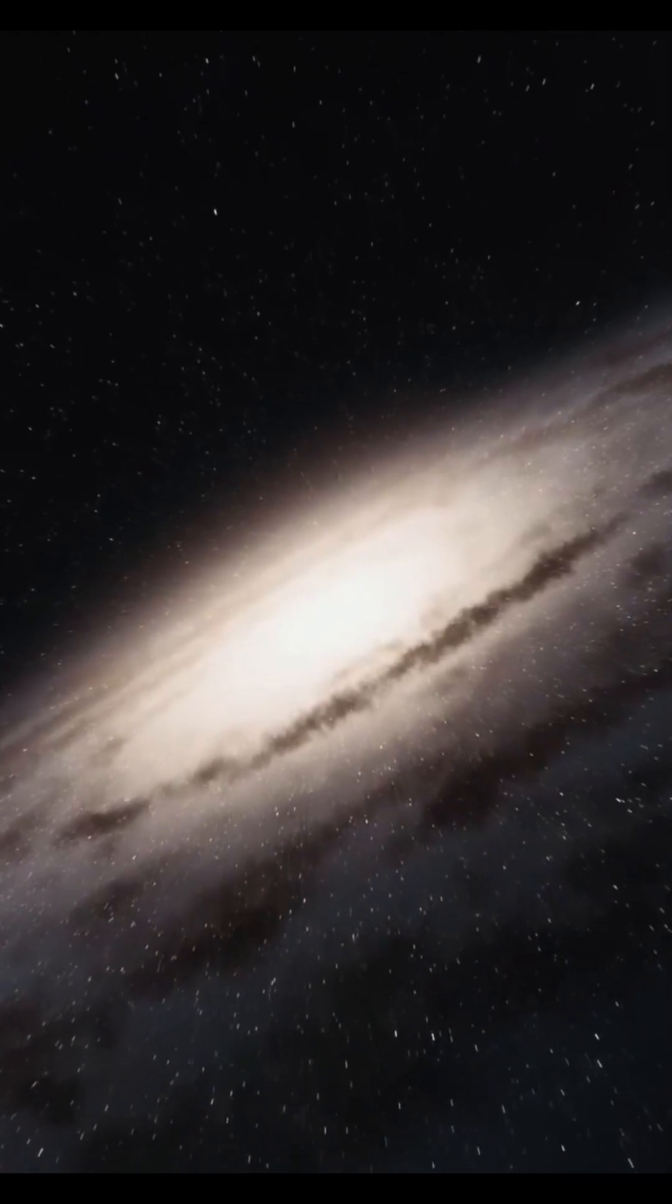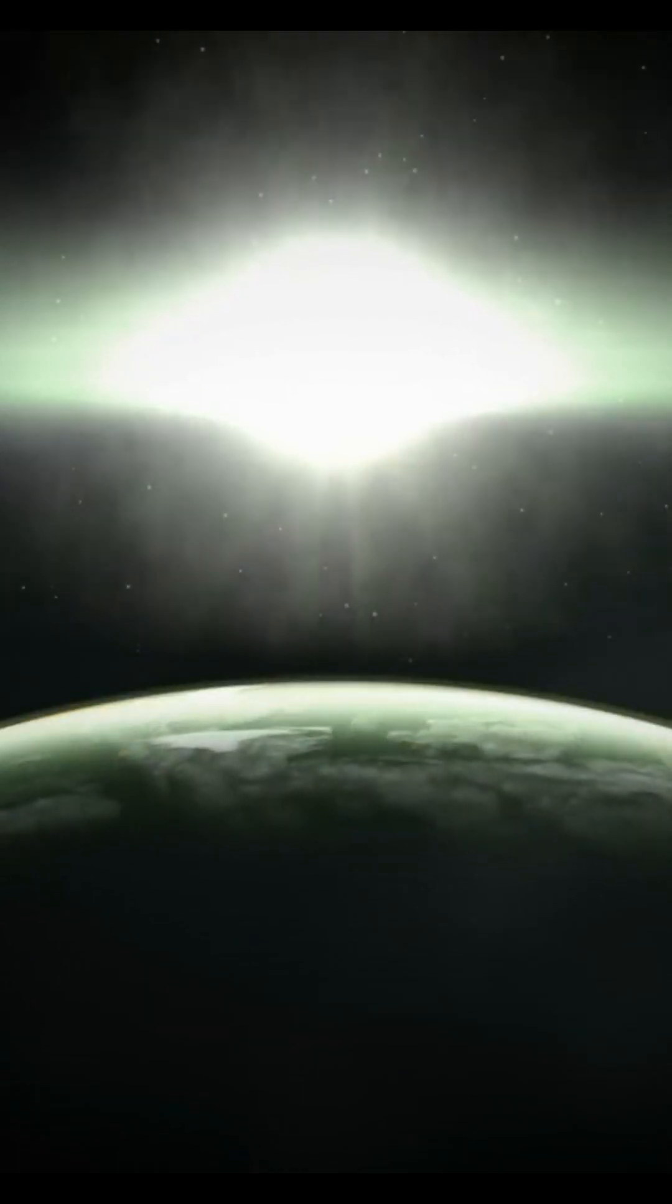We have a census of the Milky Way galaxy for the first time. We know that on average, every single star has a planet going around it, and about one-fifth or so of them have Earth-sized planets going around them.